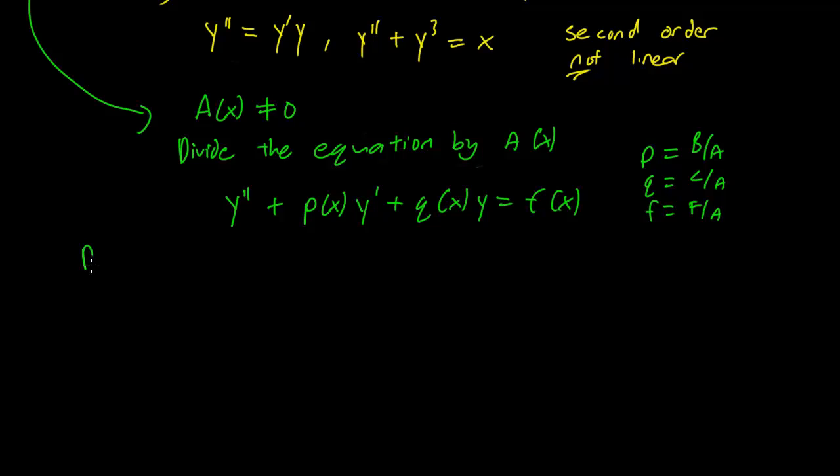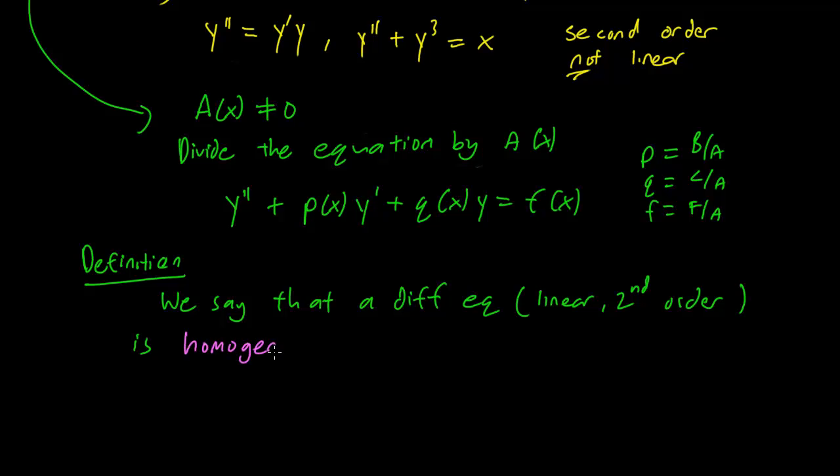We say, definition, we say that a differential equation that's linear and second order is homogeneous if f(x) equals zero. So that this term that doesn't have any y in it is zero. This is actually slightly confusing terminology because if you remember last chapter, we had a concept of a homogeneous first order equation.